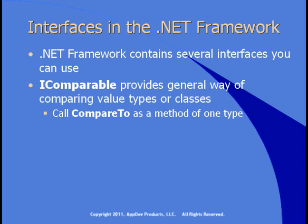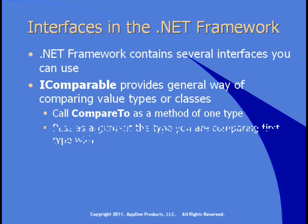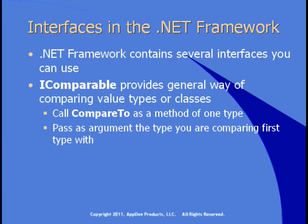When you implement iComparable, you add a compareTo method to your class. You can use compareTo to compare two values — first value.compareTo, passing the second value as an argument, and compareTo will tell you whether or not the two are equal. Some classes in the framework already implement iComparable; for example, string has compareTo built in. If you implement iComparable in your own classes, your classes can include compareTo as well. Let's see a demo of creating and implementing your own interfaces and adding iComparable to a class.